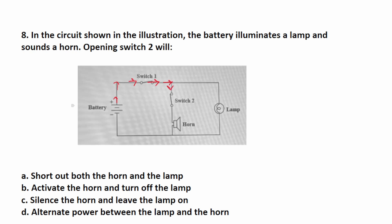We're assuming switch one is closed. So it's going to go this way, as well as this way. It's going to turn on the lamp and go back to the negative side of the battery here. Now, if switch two here is open, electricity cannot flow to the horn. So if switch one is closed and switch two is open, only the lamp is going to light up and the horn is no longer going to work. So this one is going to be silence the horn and leave the lamp on, C.